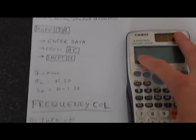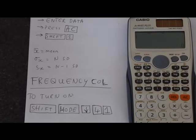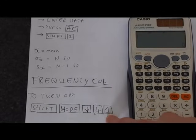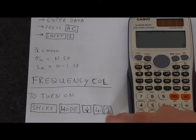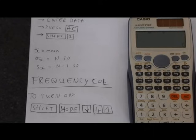Sometimes when you've got large amounts of data, you may want to use the frequency column. There's a set of instructions which show you how you can turn on the frequency column. If you had data like 1, 5, 5, 2,